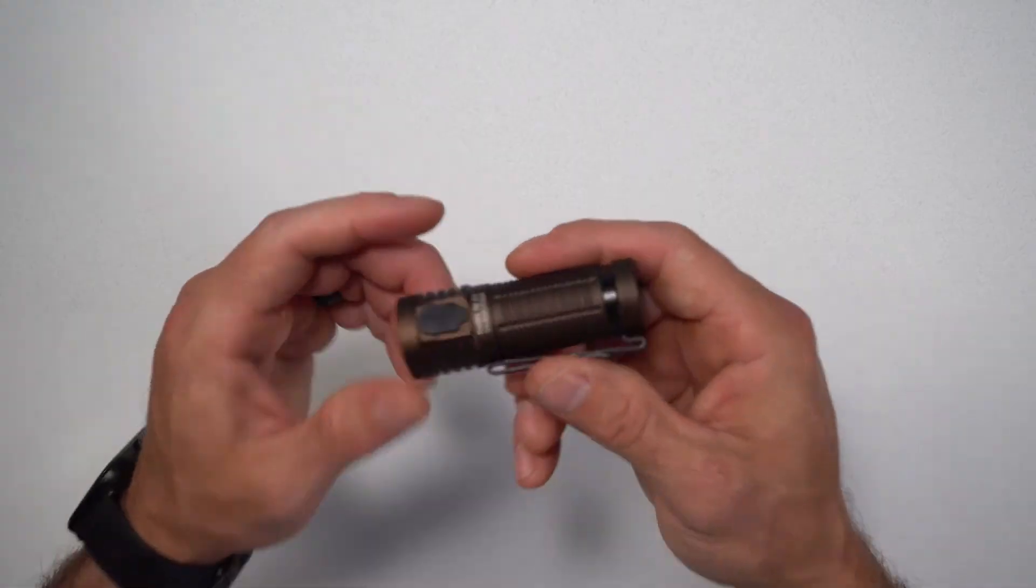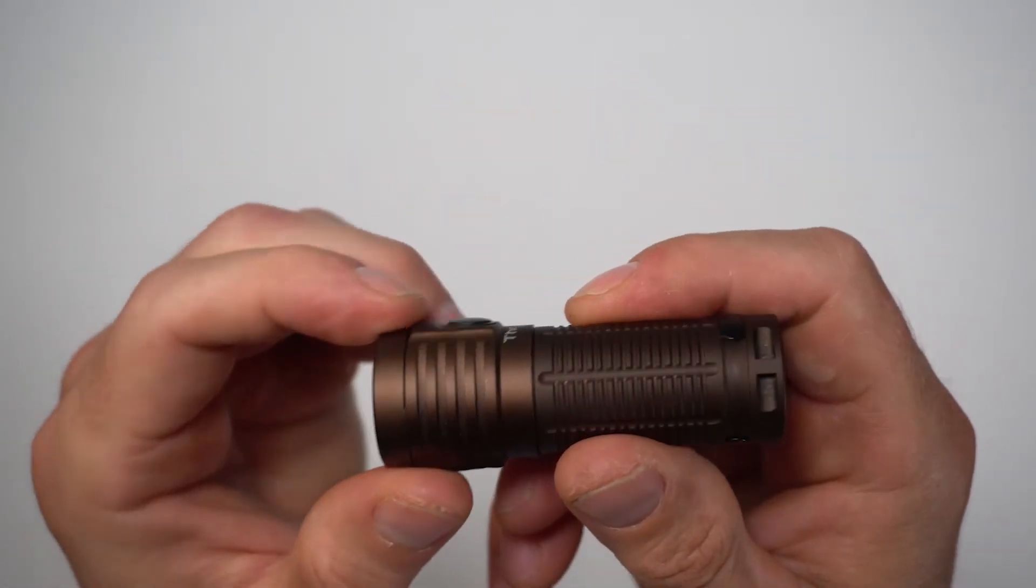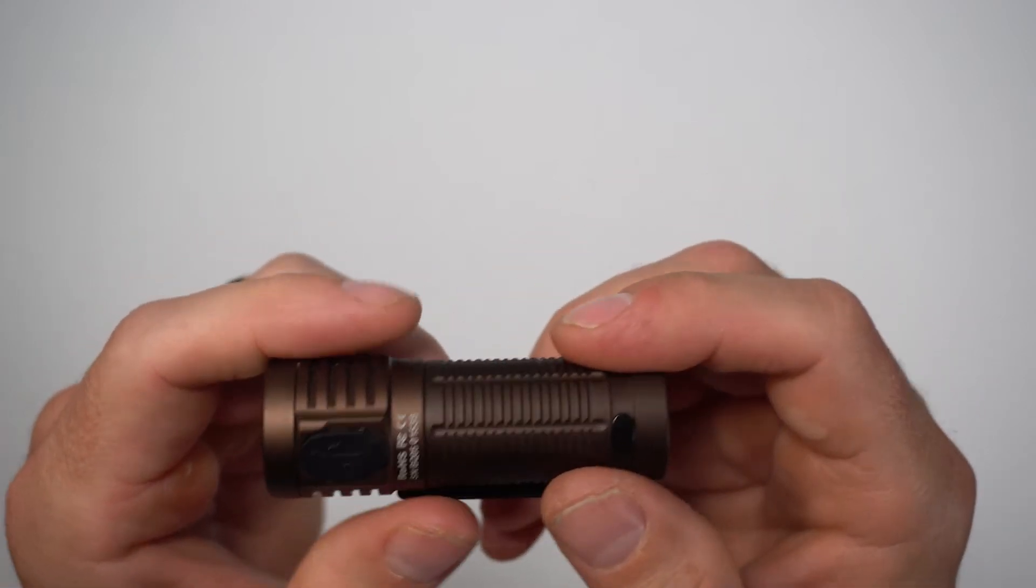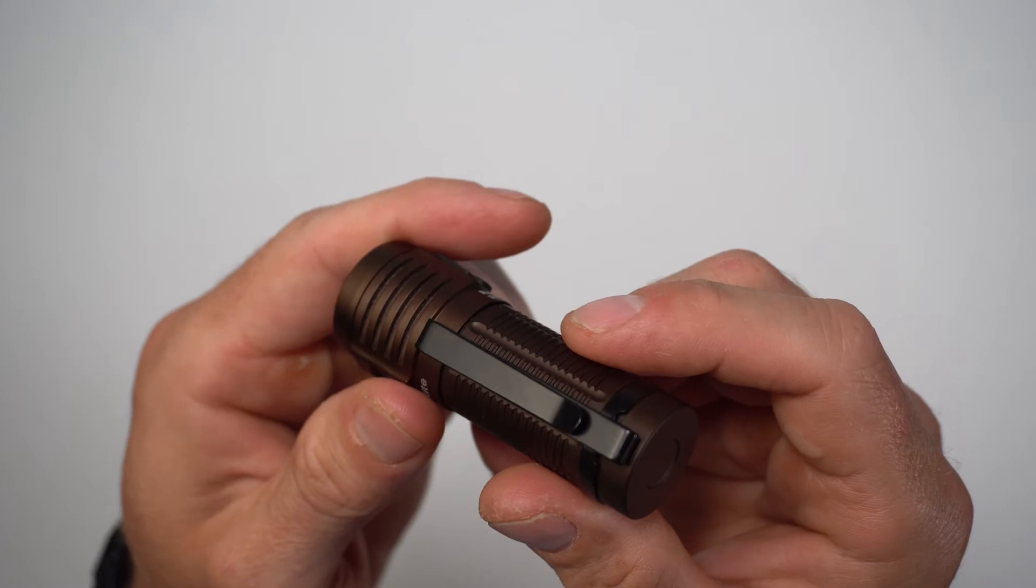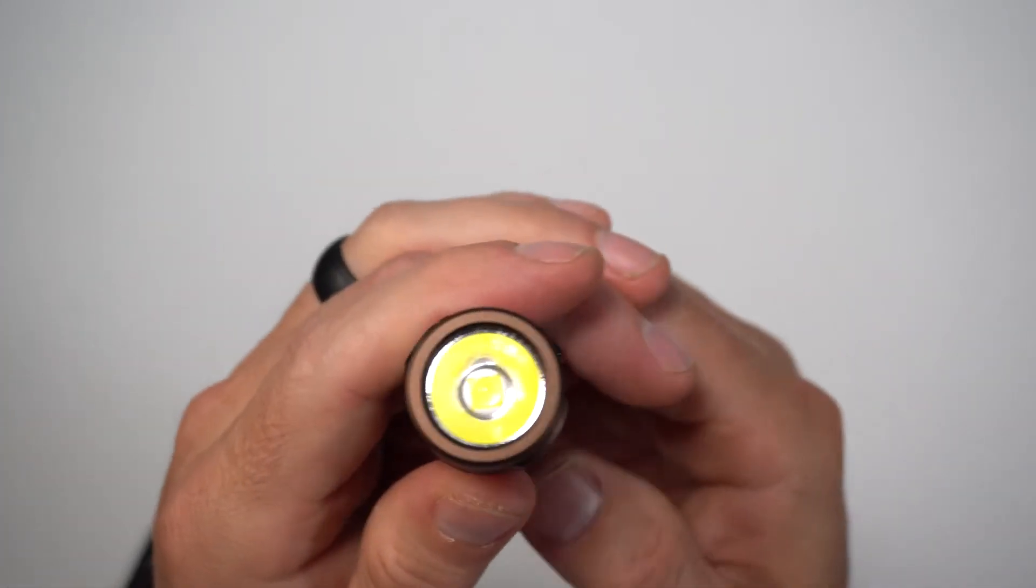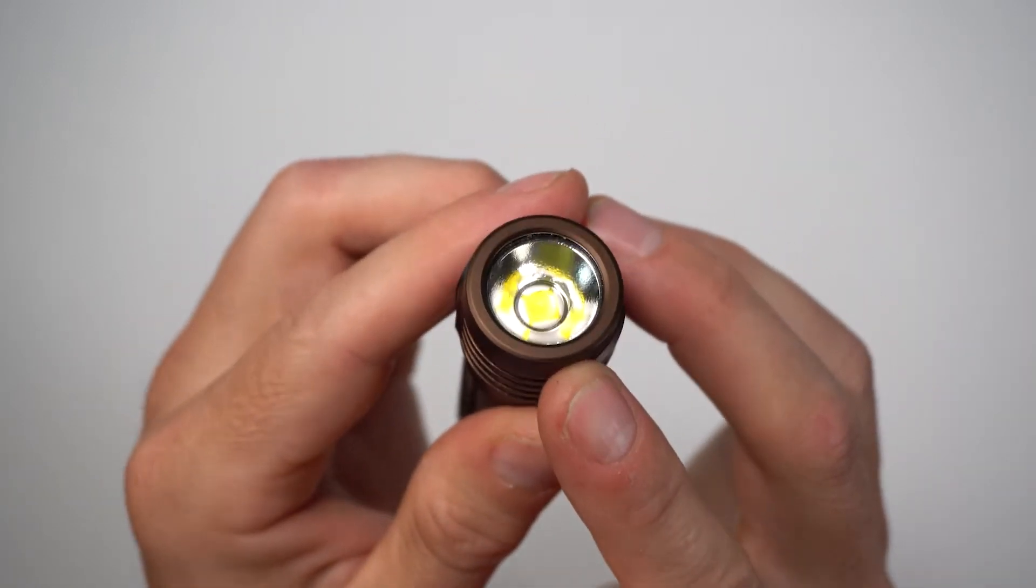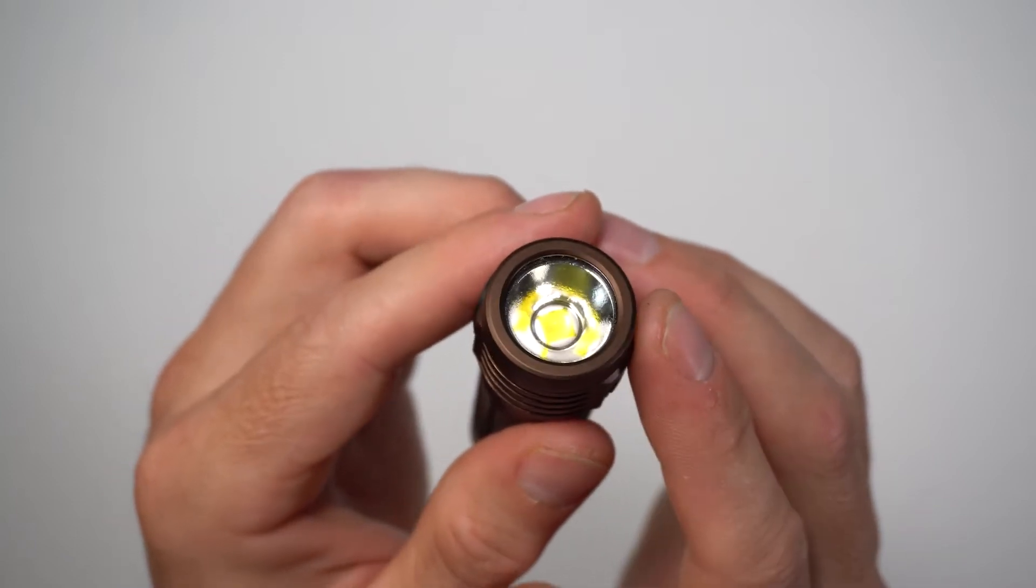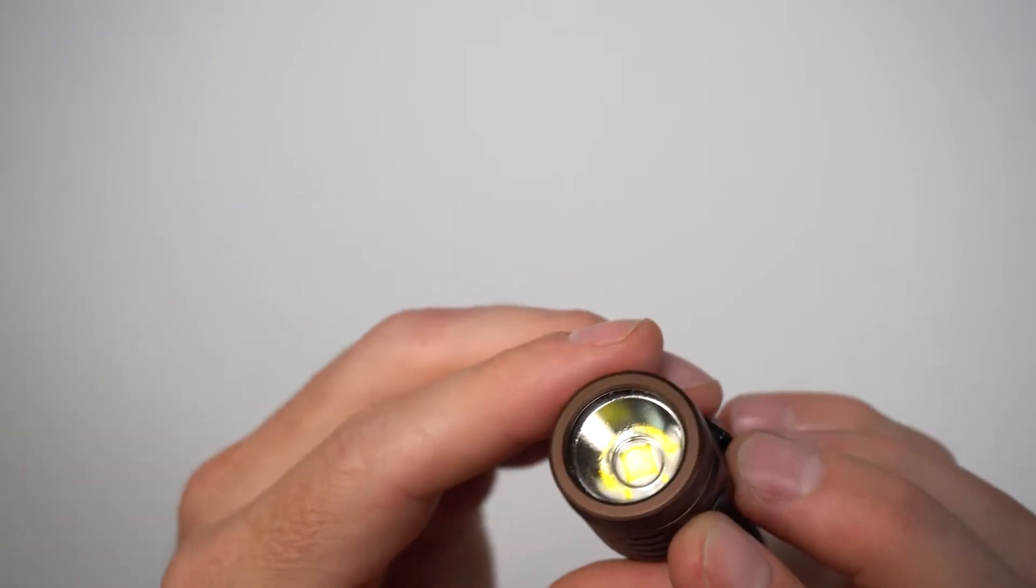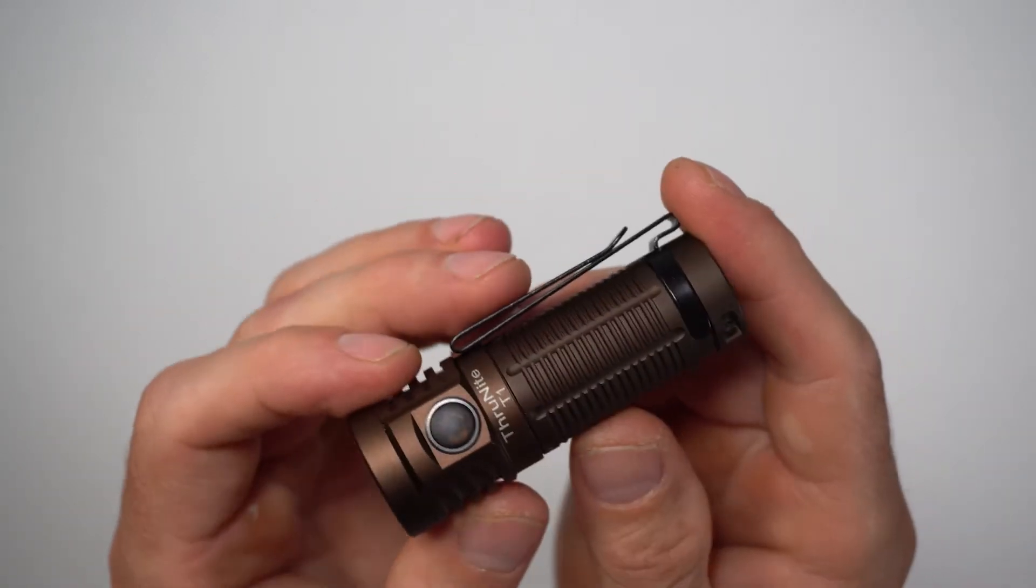So starting off with the specs, it is 2.7 inches long by one inch at the head by 0.86 at the tail. That's 69.5 millimeters by 26.5 by 22 millimeters. Does have a Cree XHP 50 emitter. This one's in neutral. It comes in both neutral and cool white. So it's got a fairly shallow reflector that's lightly orange peeled.